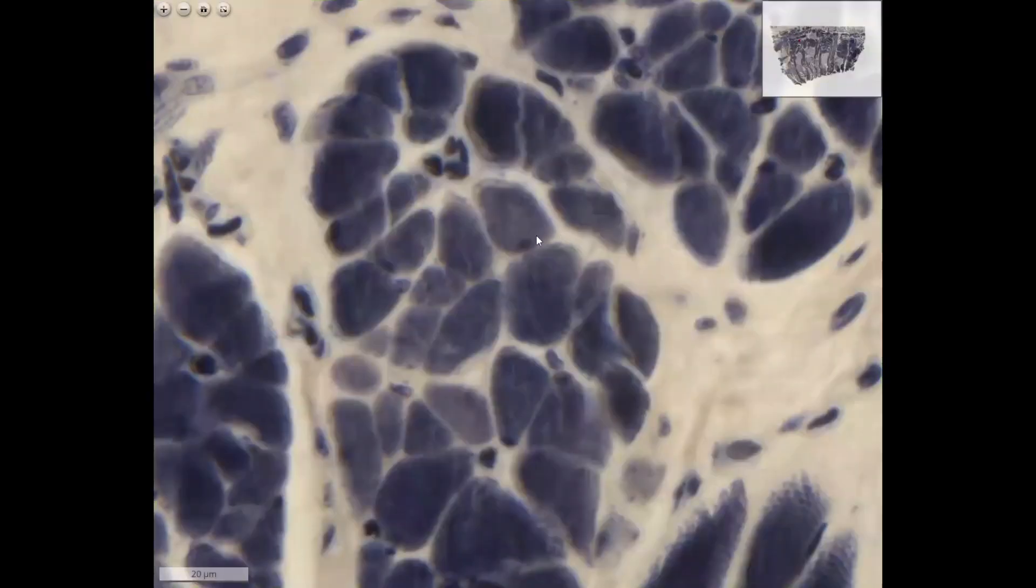In the cross-section profiles, the nuclei are also under the sarcolemma, like here. Or you don't see a nucleus because the cut didn't go through the plane of the nucleus. You see a fine punctuation in the cross-section of these muscle cells. These are the cross-sections of the myofibrils.